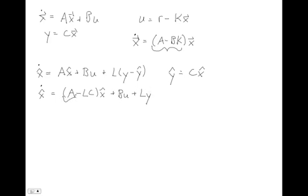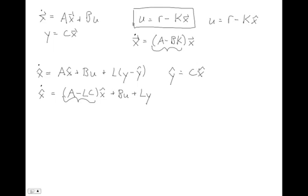Through choices of gain matrix L, we can make the eigenvalues of this observer be whatever we want — stable and with the time response we want. Now we want to implement the control algorithm using feedback from estimated states. The question is: can we use u equals r minus K times x-hat? It seems reasonable. We know x-hat will be wrong for some period of time, but because of the closed-loop observer result, x-hat will have the dynamics we want, and after some period of time x-hat will become more and more accurate, eventually looking very much like x.